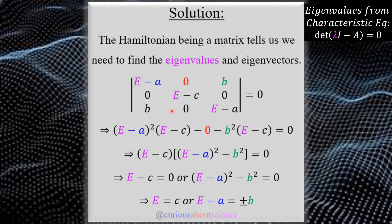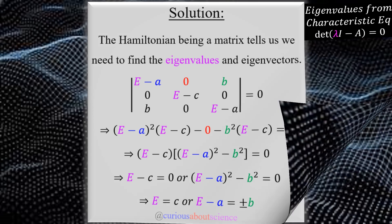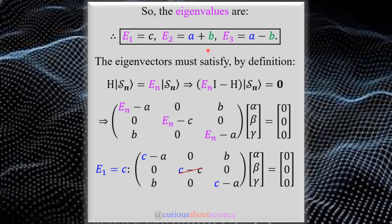For the third cofactor, covering that row and column gives zero times zero minus b times b, so we get -b². We set this equal to zero — that's our characteristic equation. Both terms share a factor of (E-c), so we factor that out. This leads to two cases: either E-c equals zero, giving E equals c, or the bracket equals zero, giving (E-a)² = b², so E-a = ±b.